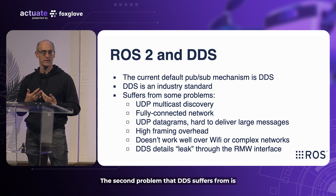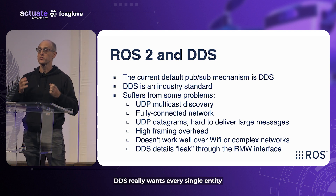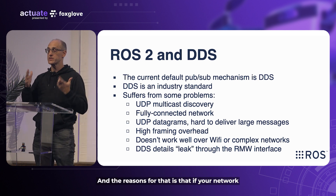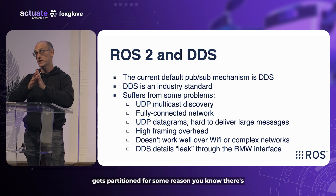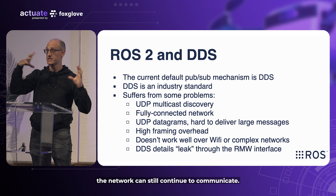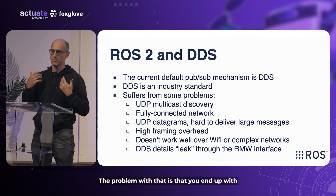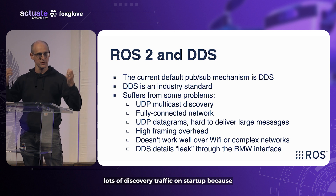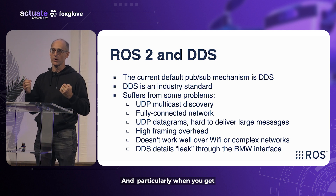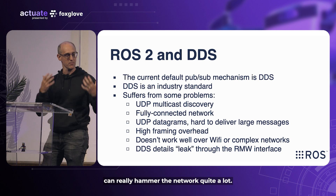The second problem that DDS suffers from is it's a fully connected network. DDS really wants every single entity in the network to know about every other entity. The reason is that if your network gets partitioned, your portion can still continue to communicate — an important design property. The problem is you end up with lots of discovery traffic on startup because everything has to discover everything else, and particularly with complex ROS graphs you can really hammer the network.